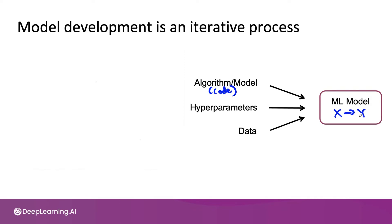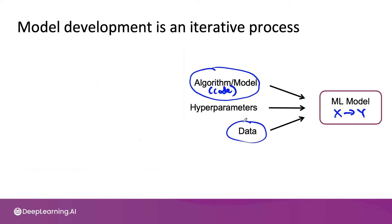It is important for many applications to make sure you have a well-tuned learning rate and regularization parameter and maybe a few other things. Hyperparameters are important, but because the space of hyperparameters is usually relatively limited, we'll spend more of our time focusing on the code and on the data.